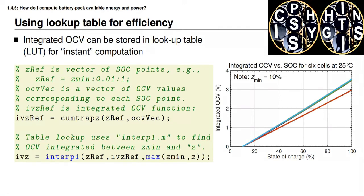The figure shows the result of this computation for six different cells whose OCV relationships were plotted earlier. The two lines at the bottom correspond to the two iron phosphate cells with slightly lower open circuit voltage; the other four lines — nearly on top of each other — are for lithium manganese oxide, lithium cobalt oxide, and nickel manganese cobalt oxide cells. The integrated OCV relationships are nearly but not quite linear, so the approximation of nominal voltage times change in state of charge is sometimes good but not always accurate. For best accuracy, you should use the computation shown in this code.